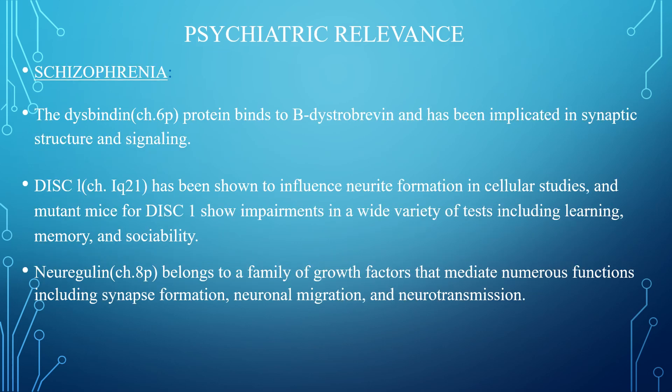In schizophrenia, DISC1 binding on chromosome 6P binds to beta-dystrobrevin and has been implicated in synaptic structure and signaling. DISC1 on chromosome 1Q21 has been shown to influence neurite formation in cellular studies, and mutant mice for DISC1 show impairment in a wide variety of tests including learning, memory, and sociability. Neuregulin on chromosome 8P belongs to a family of growth factors that mediates numerous functions including synapse formation, neuronal migration, and neuronal transmission.